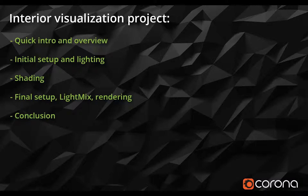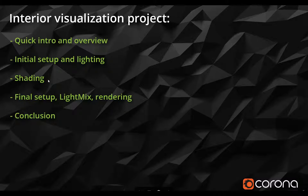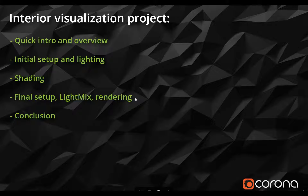Again, in the same way as the automotive one, this tutorial will be divided into five parts: a quick intro and overview, which is this part; then we will set up and light our scene; once that is done we will do all the shading of the surfaces, which is probably going to be the longest part; then we will go to the final setup, set up some light mix to show that workflow, and set up our scene for the final rendering.